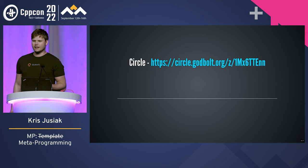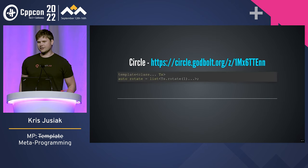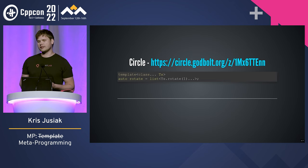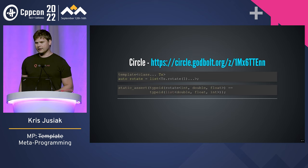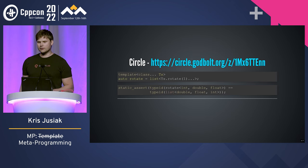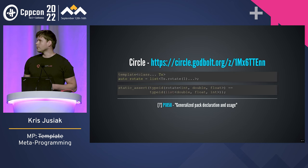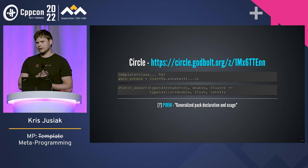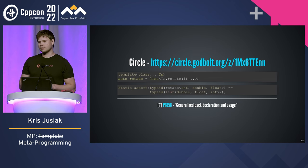The current Circle can do something like this — the rotate with the newest version of Circle. We have a list, we do a rotate of one element to the left. The new version of Circle allows us to do a lot of metaprogramming much simpler than before. But there's still hope for C++, because there is a proposal for generalized pack declaration and usage, which allows a lot of Circle-style template metaprogramming in C++.